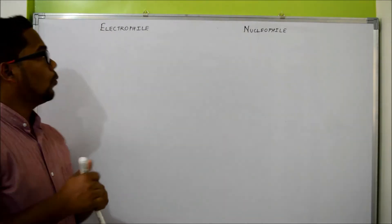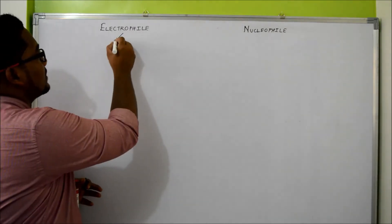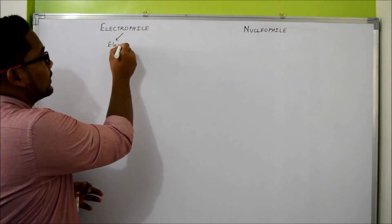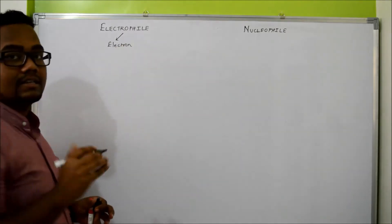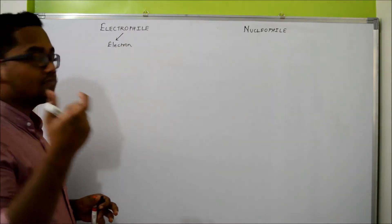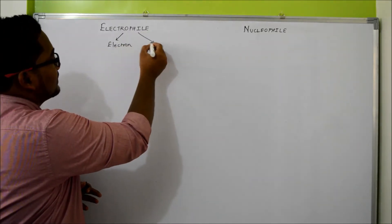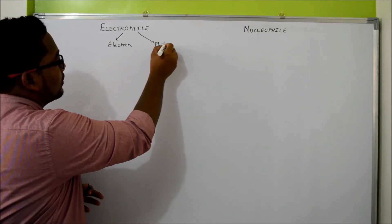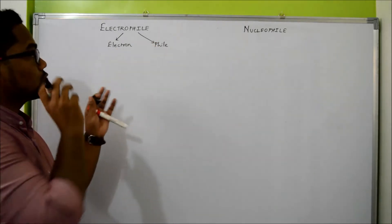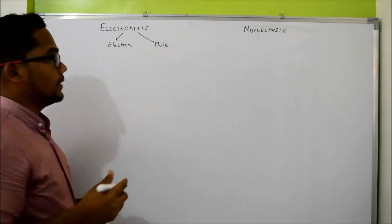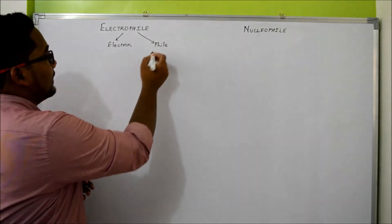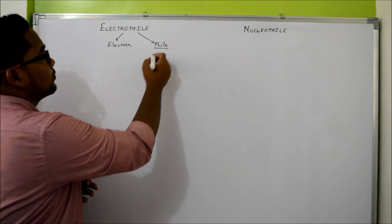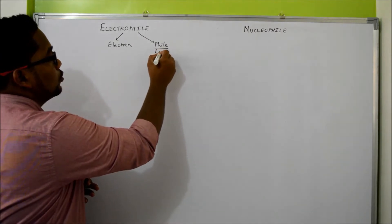Let's begin with what exactly this word means. If you split this word into two equal parts, one part stands for Electron and the other is 'phile'. This is made up of two words: one is electron and the other is phile. From these two words we are making the word Electrophile. The literal meaning of 'phile' is a French word which means to love.